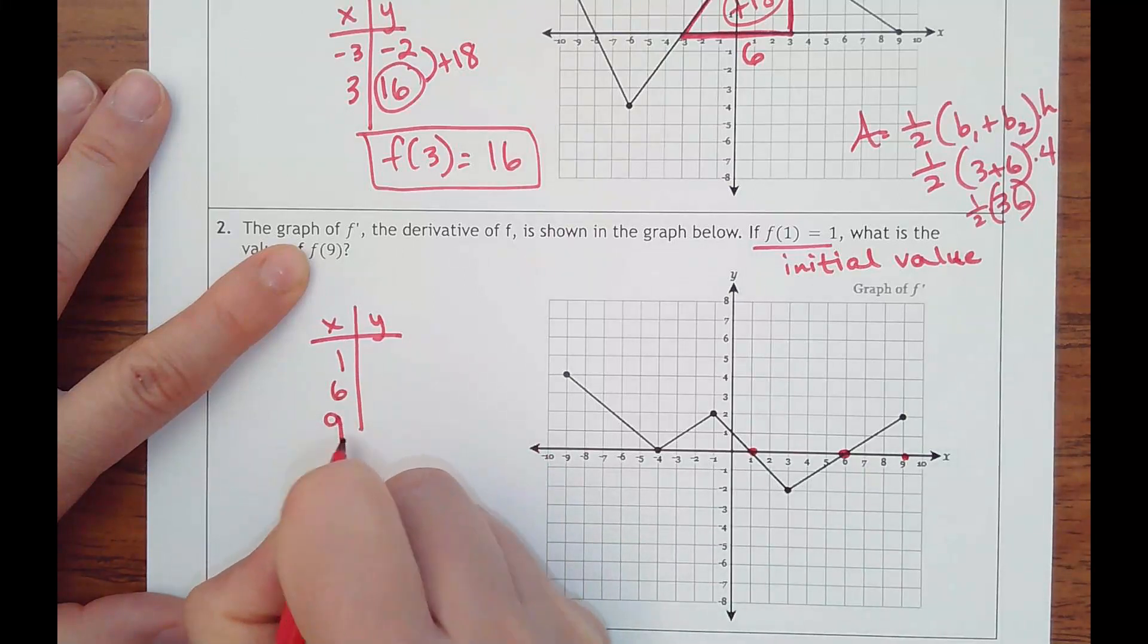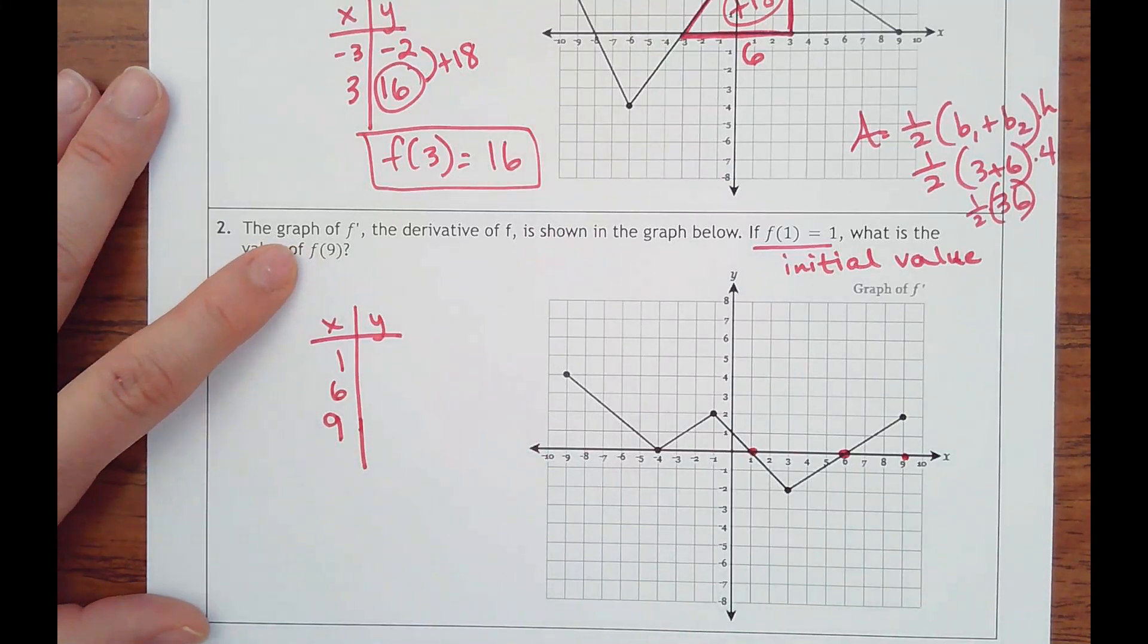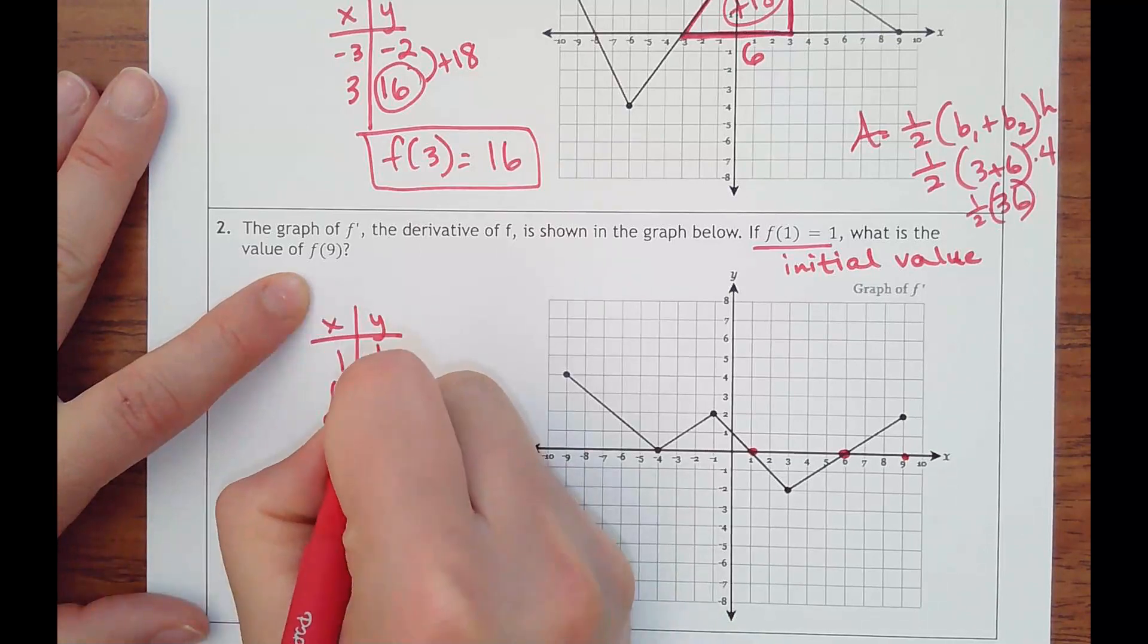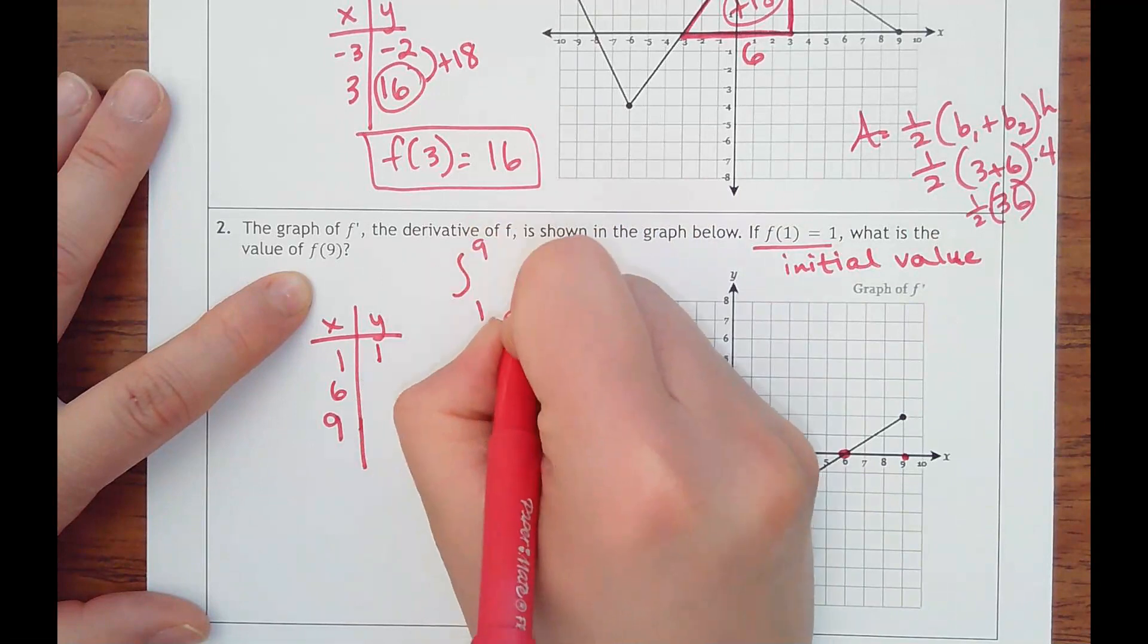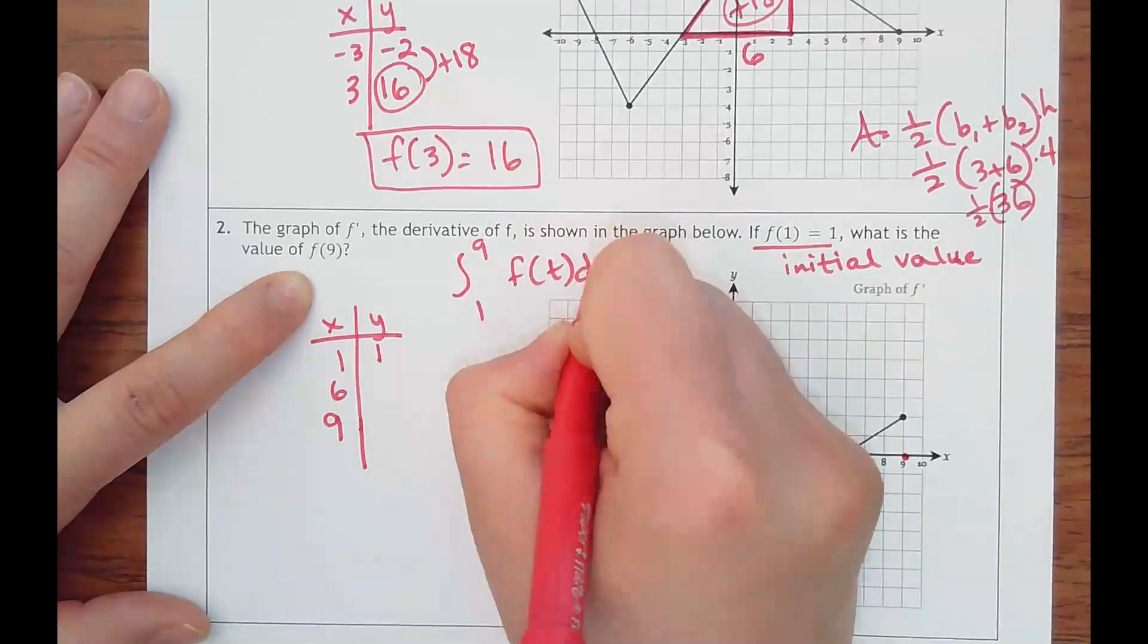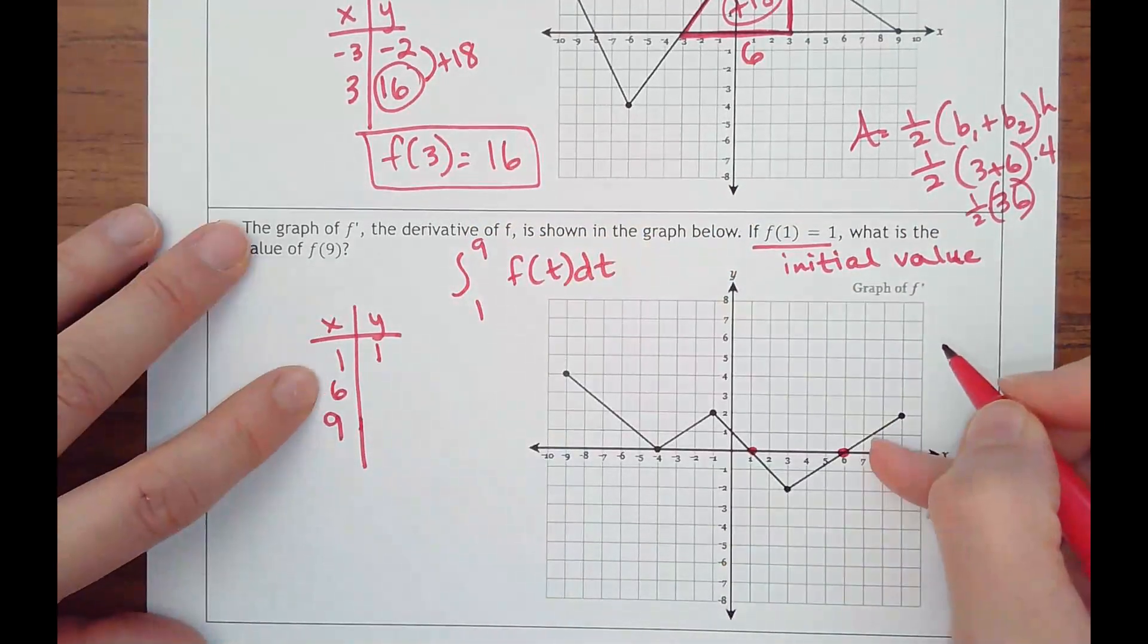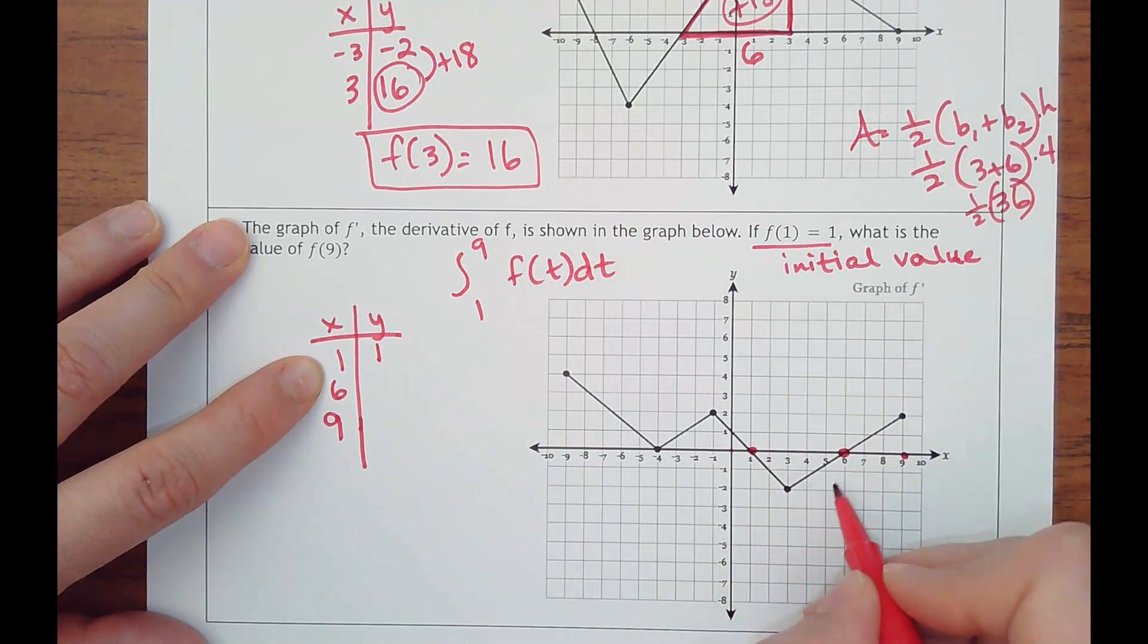It's like you're anti-deriving one to nine, the integral f of t dt. So let's find the area of one to six, and it's going to be negative, so I know I'm going to be subtracting something.